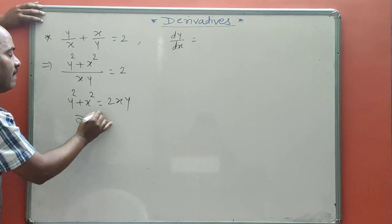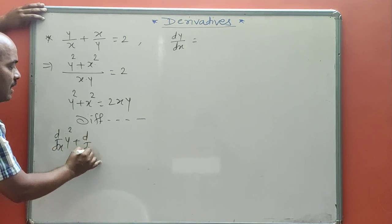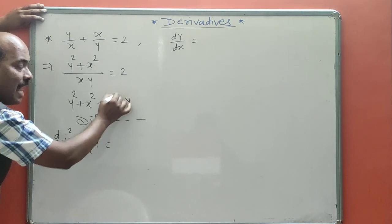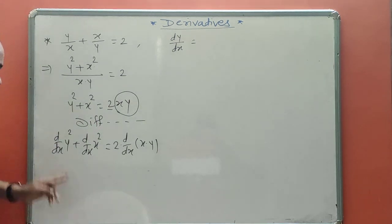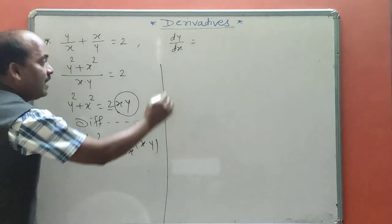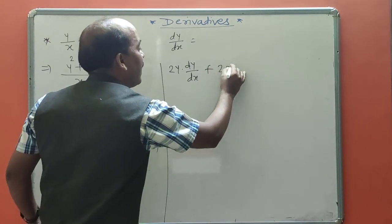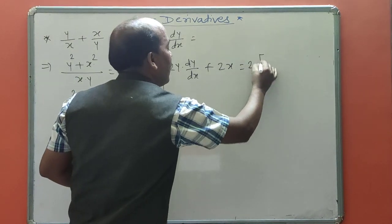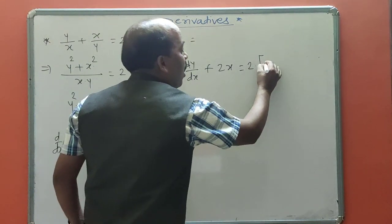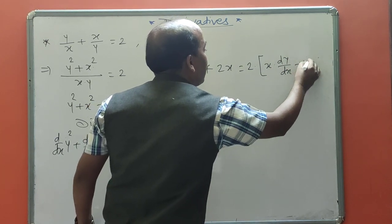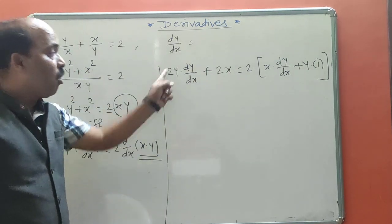Now differentiate with respect to x. Derivative of y² is 2y·(dy/dx). Derivative of x² is 2x. On the RHS, 2 is constant as it is; derivative of xy uses the product law: x·(dy/dx) plus y times derivative of x (which is 1). Dividing throughout by 2: y·(dy/dx) + x = x·(dy/dx) + y.